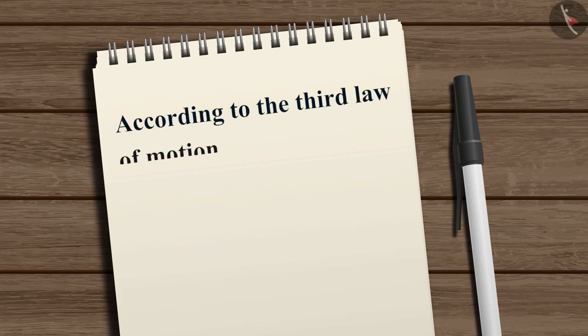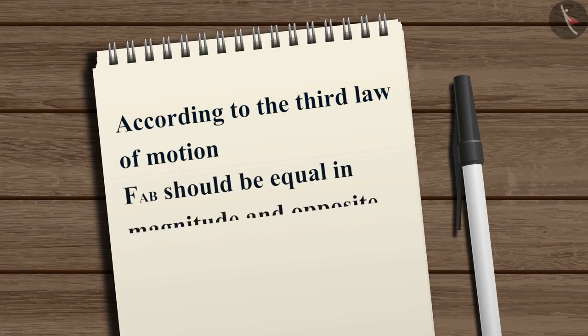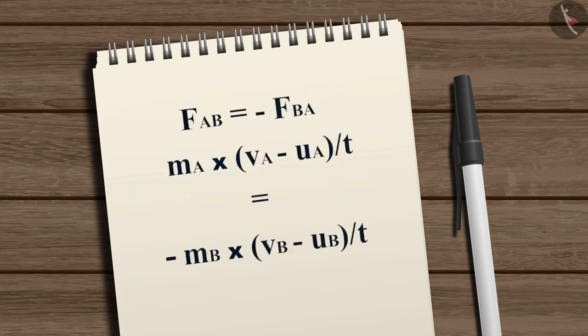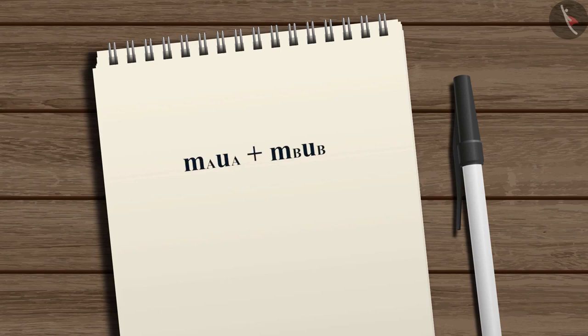Now, according to the third law of motion, the force FAB exerted by ball A on ball B should be equal in magnitude and opposite in direction to the force FBA exerted by ball B on ball A. Therefore, mathematically, we can write FAB = −FBA, or MA·(VA − UA)/T = −MB·(VB − UB)/T, which gives MA·UA + MB·UB = MA·VA + MB·VB.